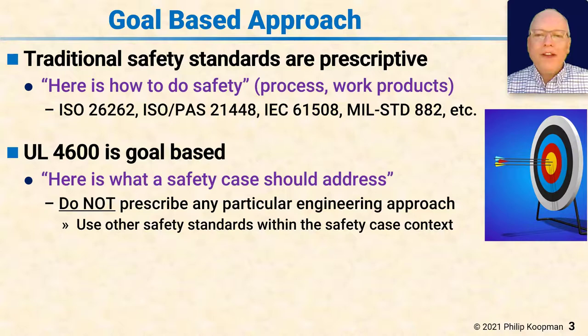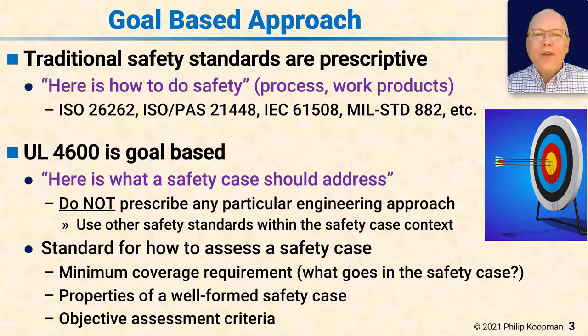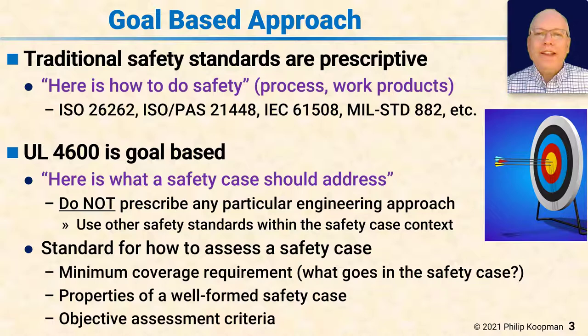For example, 4600 says you have to have a list of all the hazards that matter, but you can use pretty much any reasonable way to get there. That means 4600 can work with other safety standards, and the work products from those other standards are incorporated into 4600 as part of the safety case. This makes 4600 a standard on how to assess a safety case — what the minimum coverage requirement is, the properties of a well-formed safety case, and independent assessment criteria.